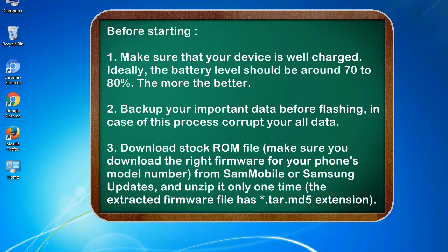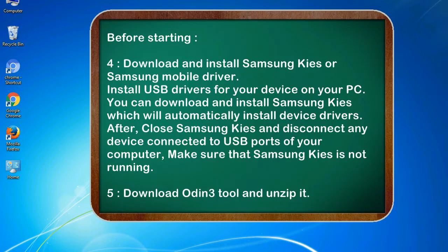3. Download the stock ROM file. Make sure you download the right firmware for your phone's model number from Sammobile or Samsung updates, and unzip it only one time. The extracted firmware file has a *.tar.md5 extension. 4. Download and install Samsung KIES or Samsung mobile driver. Install USB drivers for your device on your PC. You can download and install Samsung KIES which will automatically install device drivers.